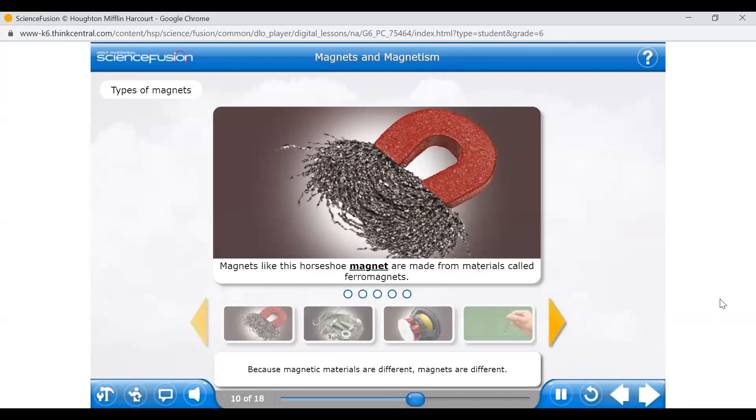Because magnetic materials are different, magnets are different. For example, some magnets have strong permanent fields, while other magnets have temporary fields. To learn more about different kinds of magnets, click the images.